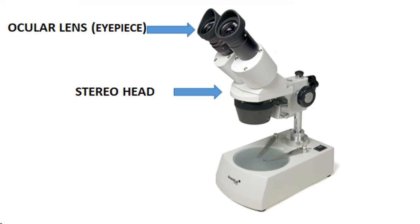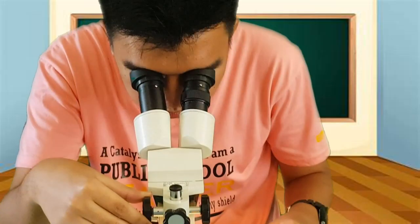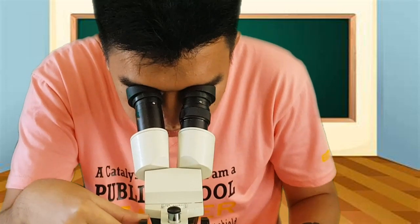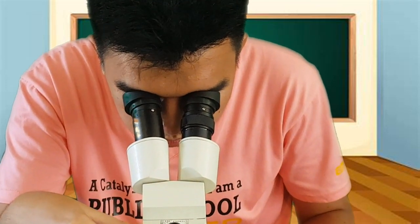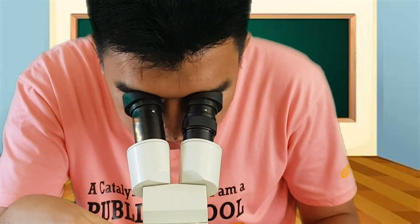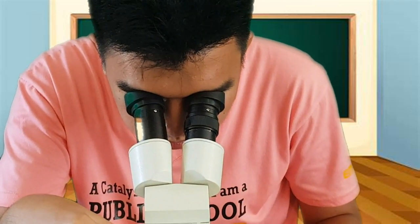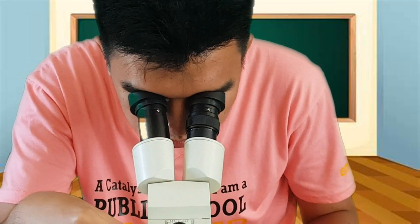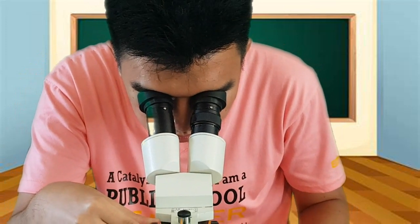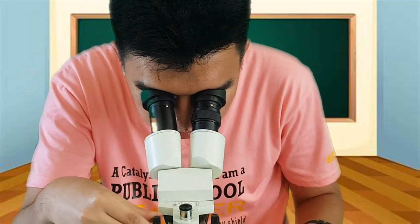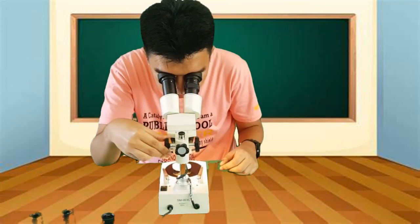Ocular lens. These are the eyepieces through which the viewer looks at the specimen. The eyepieces are typically set at 10 times magnification. It is also possible to upgrade to a higher magnification level.